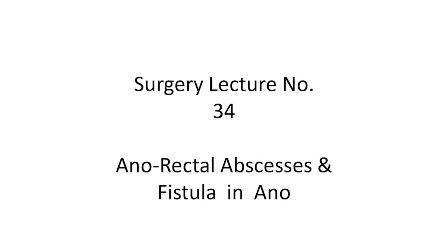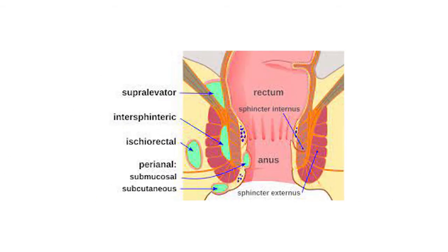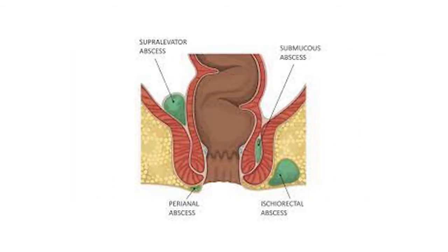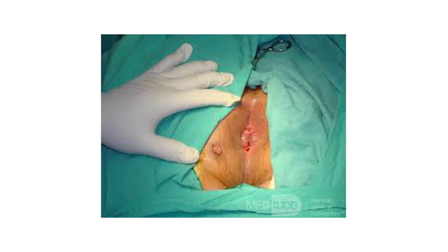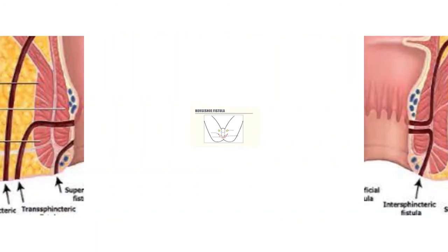Hello dear students, welcome to my surgery lecture series number 34, that is anorectal abscesses and fistula in ano. In this lecture we will cover anorectal abscesses, perianal abscesses, ischio-rectal abscesses, submucous abscesses, fistula in ano, low-level fistula, high-level fistula, Goodsall's rule, and horseshoe fistula.